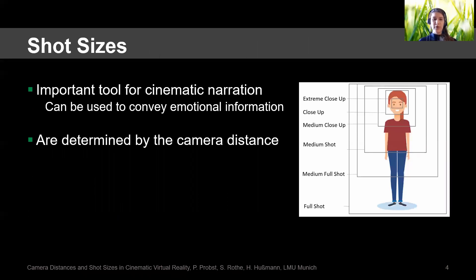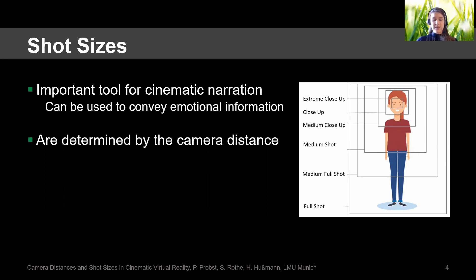Shot sizes are a very important tool for cinematic narration because they can be used to convey emotional information. They are determined by the camera distance. In traditional movies, only a part of the body of the actors is shown — for example, in an extreme close-up, only the eyes. But in CVR, the viewer always sees the whole body of the actor and gets a very good understanding of where the actor is placed in the room and at what distance.